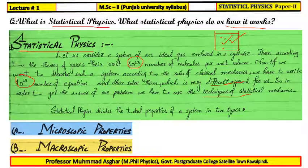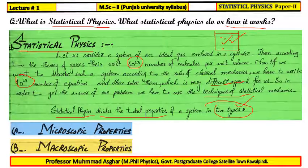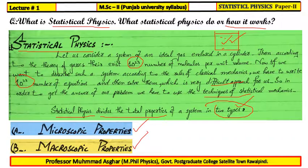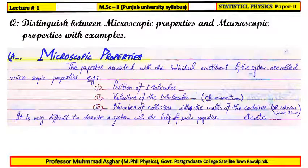Statistical physics divides the total properties of the system into two types. One type is the microscopic properties and the other is the macroscopic properties. We will first distinguish between these two properties.